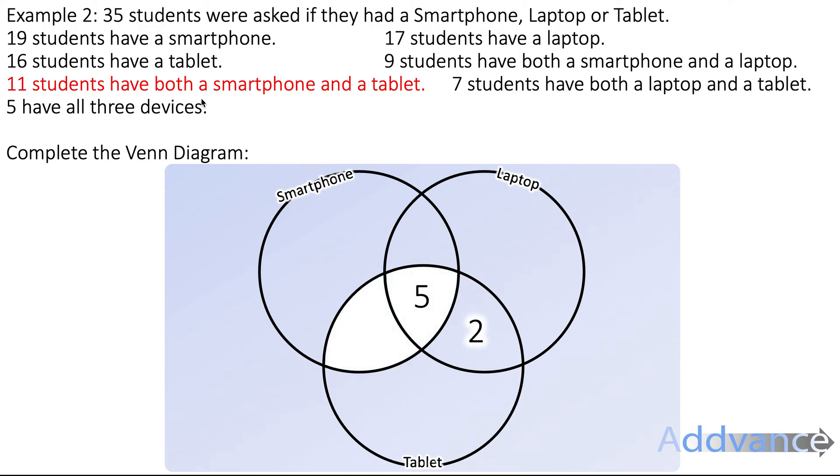Similarly, 11 students have both a smartphone and a tablet. So here, this overlap between smartphone and tablet must add up to make 11. Therefore the missing number is 6. Because 5 plus 6 is 11. 9 students have both a smartphone and a laptop. So the smartphone and laptop are these two sections here. And we know it adds up to 9. So the missing number to make 9 would be 4. 4 plus 5 is 9.